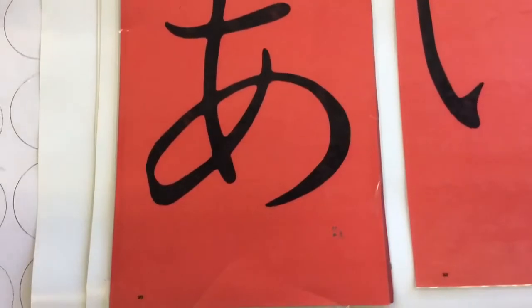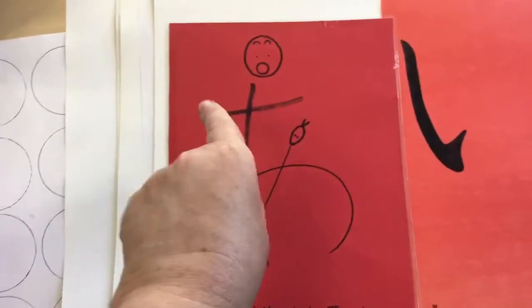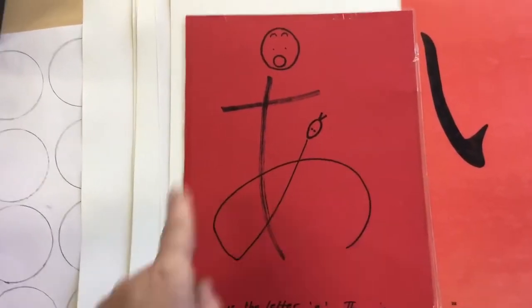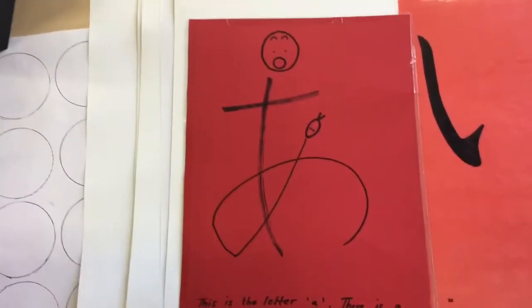The first one is called A. A way to remember it is it looks like a man with a snake in front of him. The man says, 'A, it's a snake.'